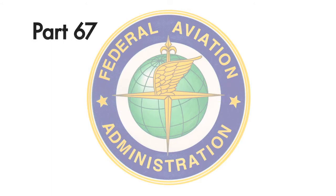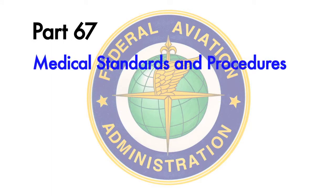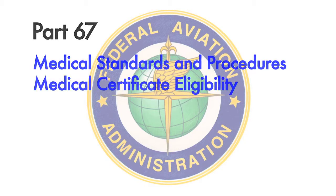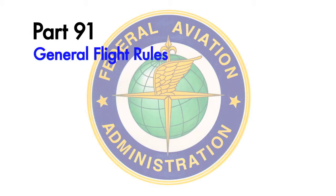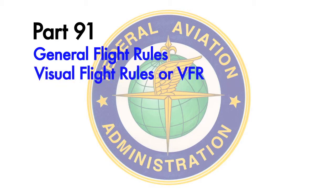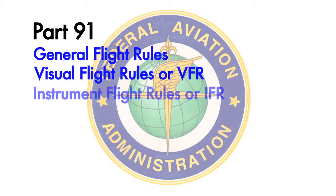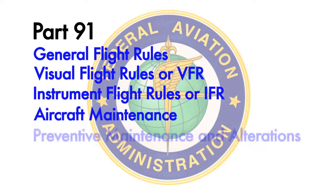Part 67 prescribes the medical standards and procedures for issuing medical certificates for airmen and medical certificate eligibility requirements. Part 91 contains general operating and flight rules. This section is broad in scope and provides general guidance in the areas of general flight rules, visual flight rules (VFR), instrument flight rules (IFR), aircraft maintenance, and preventative maintenance and alterations.